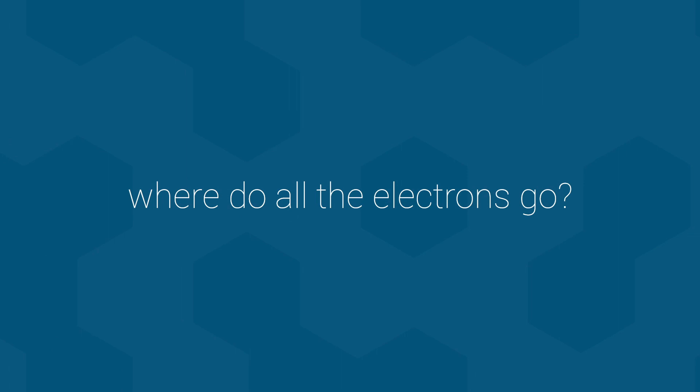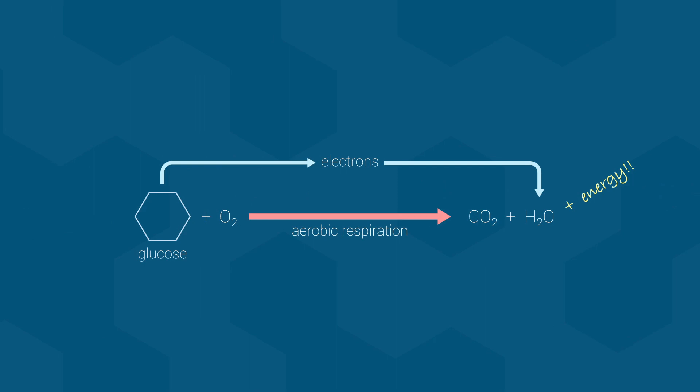If you recall from the last video, a big part of metabolism involves redox reactions and the transfer of electrons. On the catabolism side of things, this focuses on the removal of electrons from glucose during cellular respiration. These electrons eventually end up within water molecules, but the path they take is not straightforward.